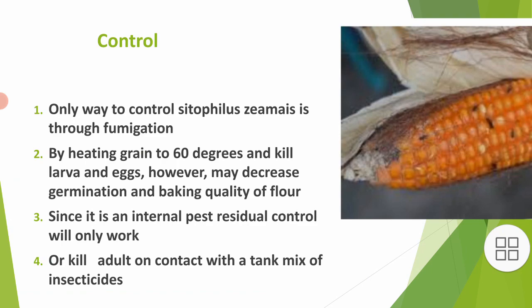If fumigation is applied, the quality of the flour will decrease and seeds may not germinate if planting is intended. Since it is an internal pest, residual control will only kill adults by placing them in contact with a tank mix of insecticides. Control is achieved through fumigation or by using insecticides.